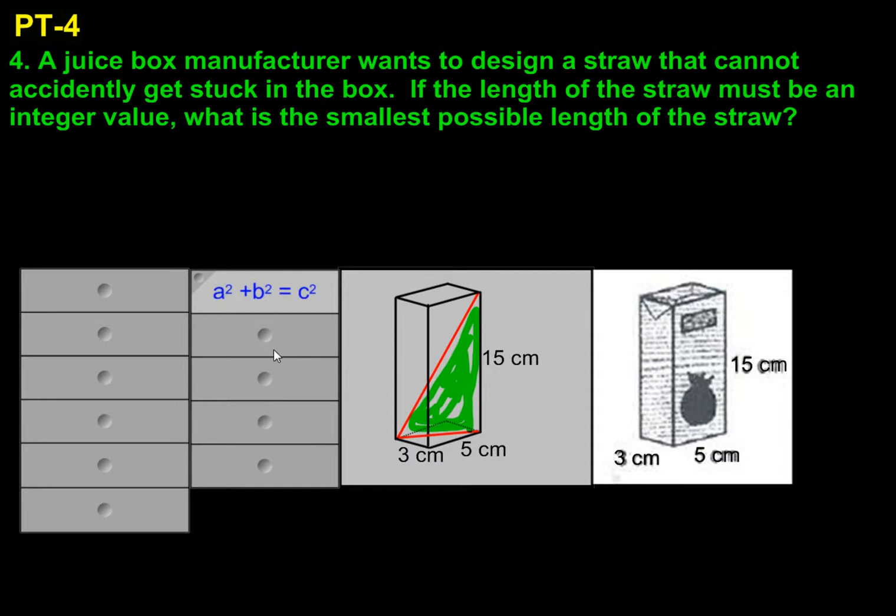If we take the Pythagorean theorem and plug the 3 and the 5 in, we'll get 9 plus 25 equals c squared. We'll get 34 equals c squared. Instead of solving the square root of 34, we'll leave it as that for now, because now we know that this leg's length is the square root of 34.